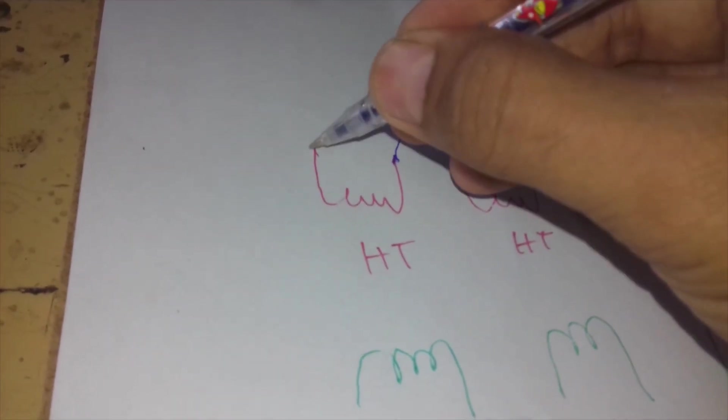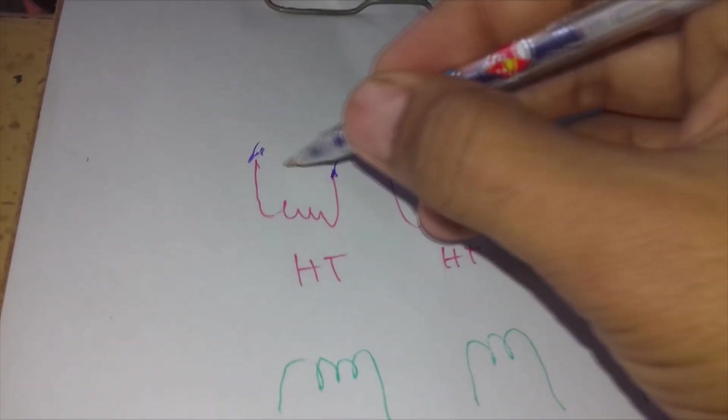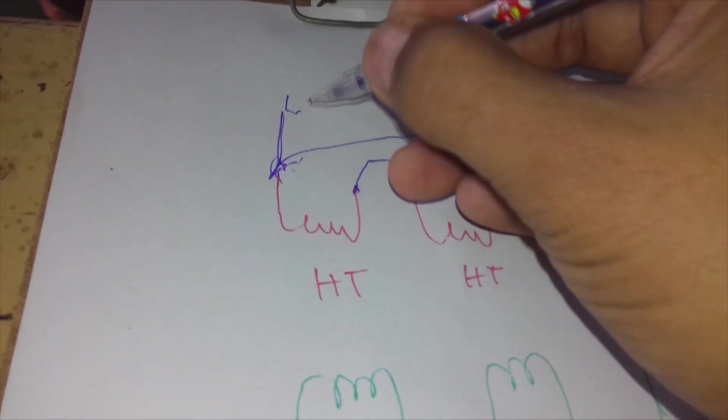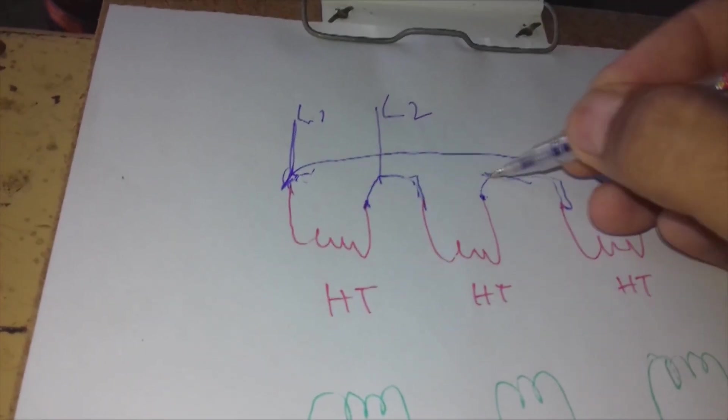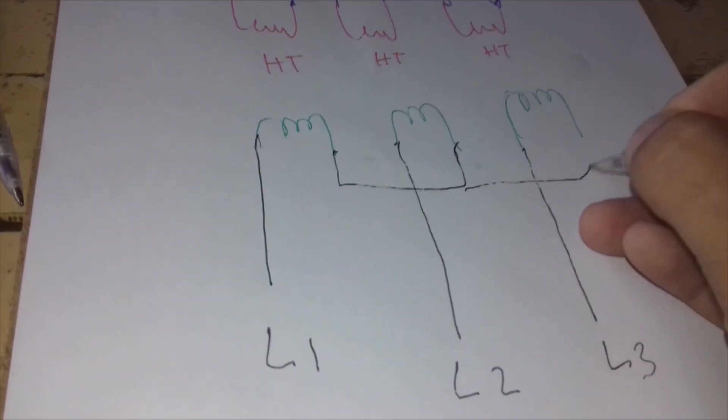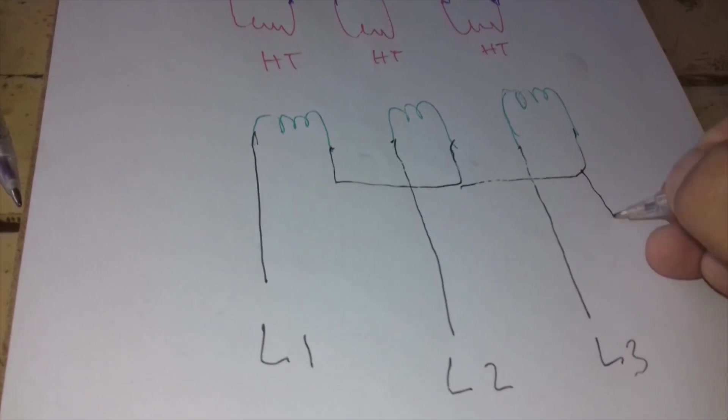The starting of the first coil is connected to the ending of the last coil, completing the delta connection. From each and every coil we bring out the phases L1, L2, and L3. There is no neutral in the primary side because in a delta connection there is no neutral. On the secondary side, from each and every coil we bring out L1, L2, and L3 from one end of each coil.